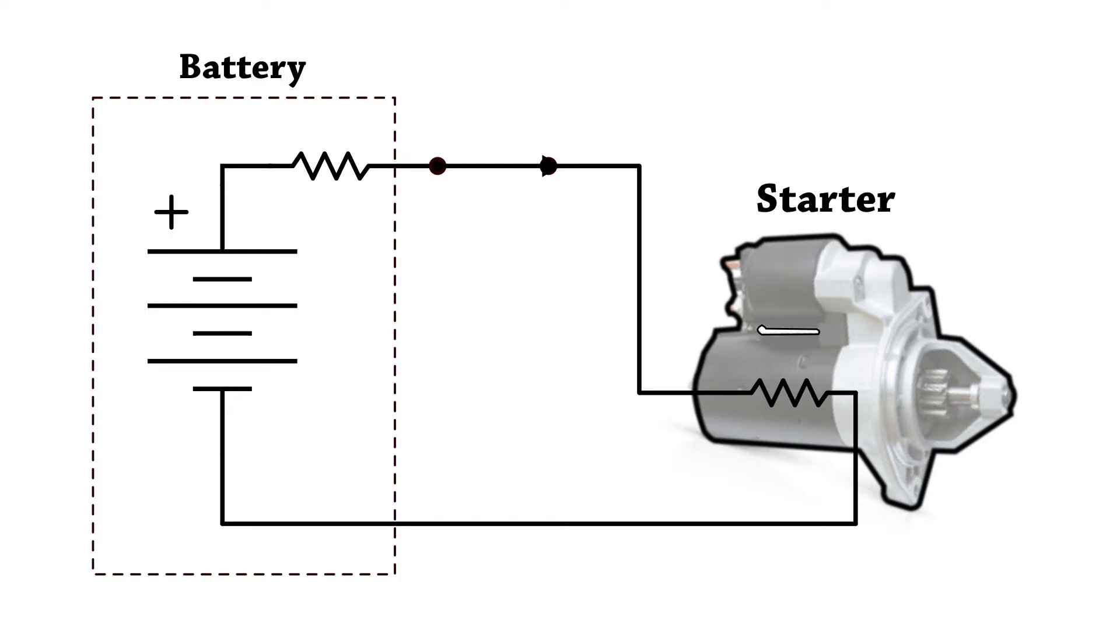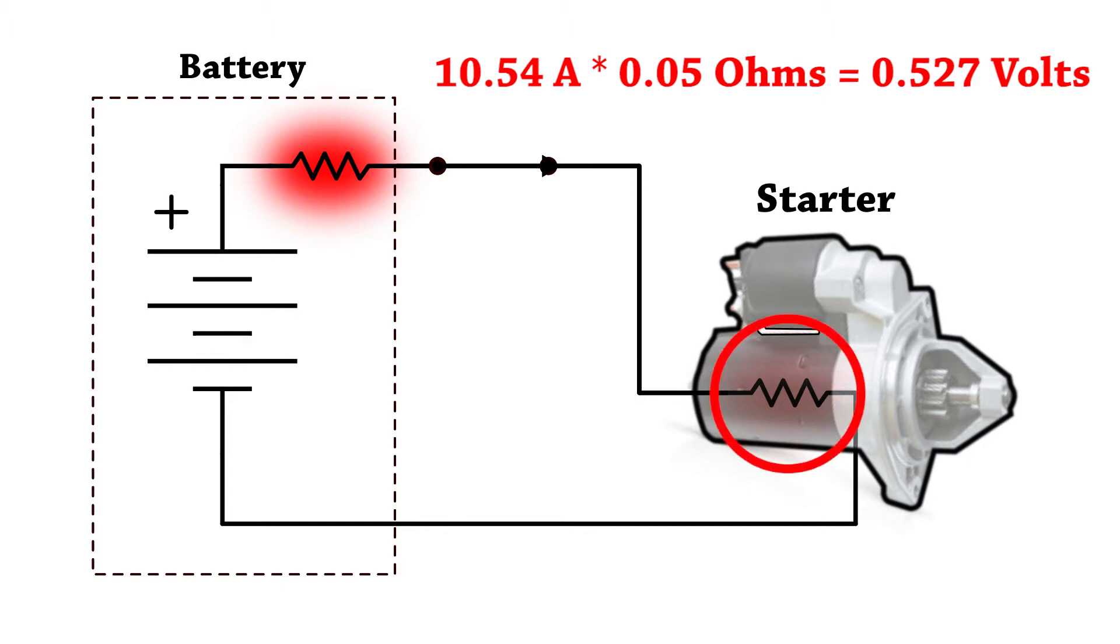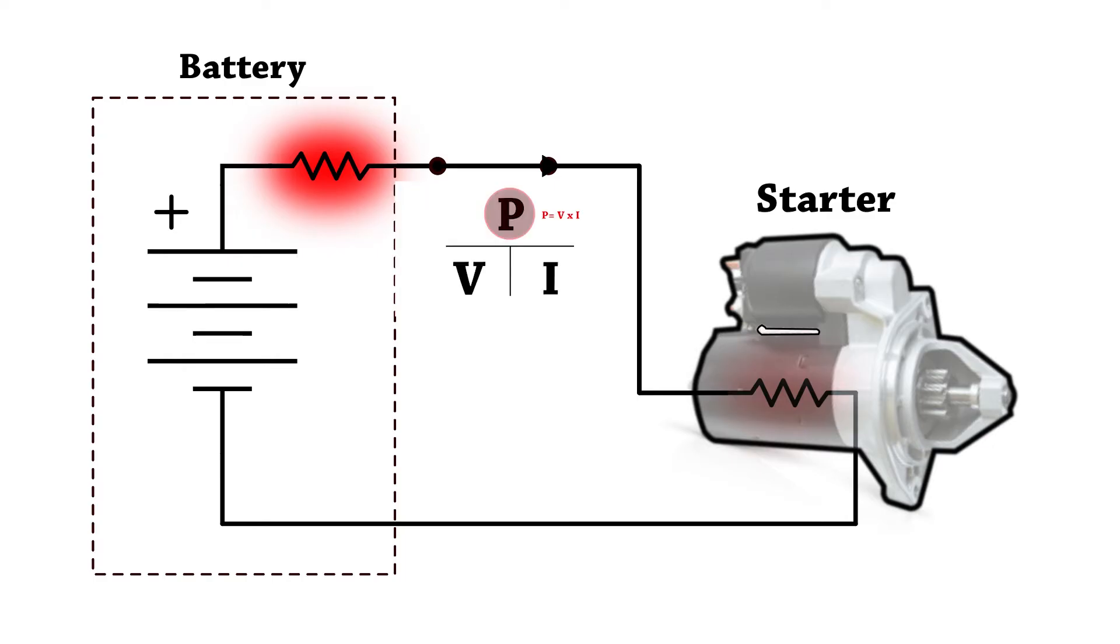So let's look at this from an energy point of view. If we have 10.54 amps flowing through our starter motor which is 50 milliohms, we can figure out the voltage drop across the starter. We simply multiply the current times the resistance, which yields 0.527 volts. Now we can calculate the power in the starter motor by multiplying that voltage times the 10.54 amps. That gives us 5.5 watts of power dissipation in the starter motor.